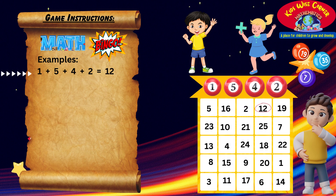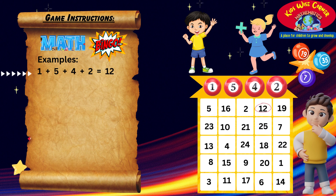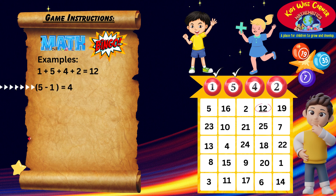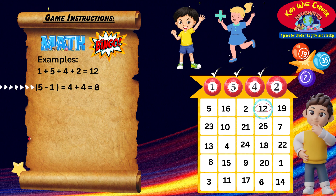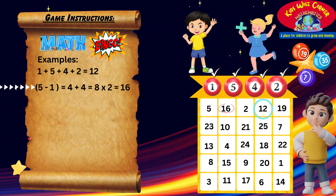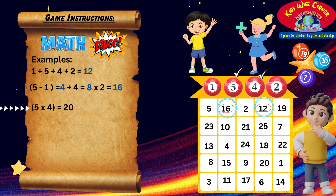Let's do more examples together. We added one plus five plus four plus two to get twelve. Another example: five minus one equals four, then we add the four, so four plus four equals eight. We multiply the number eight by two. What do we get? We get sixteen. Let's circle the number sixteen.